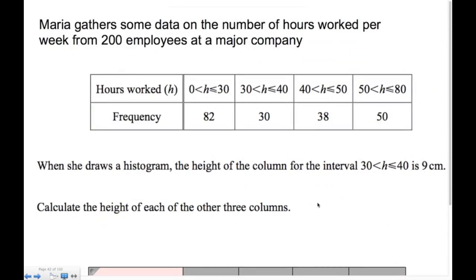Here's a slight variation: we're not even given a histogram, just told that the height of the 30-to-40 interval is 9 centimeters when drawn. We need to find the heights of the other three columns. The frequency density for that interval is 30 divided by 10, which is 3.